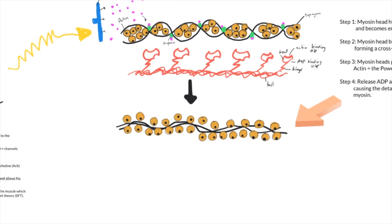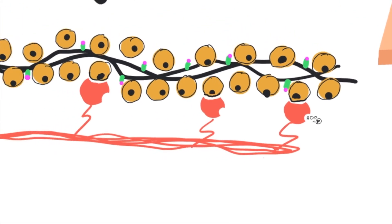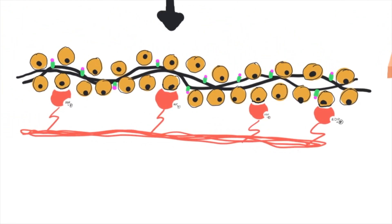Once actin is no longer being guarded by those regulatory proteins, the myosin head and actin stick together like a magnet. Once stuck together, we hydrolyze the ATP sitting in the binding site of the myosin head — we pop off that phosphate, giving us a burst of energy to cause a contraction. The myosin head binds to actin, undergoes that power stroke, and then releases. The thin filaments are pulled towards the center of the sarcomere.